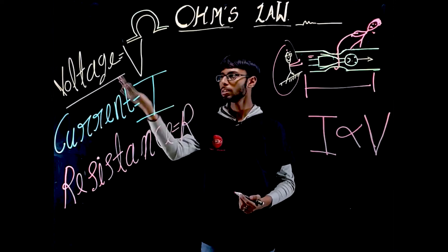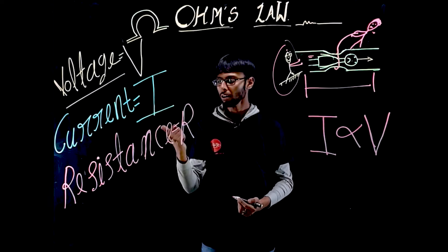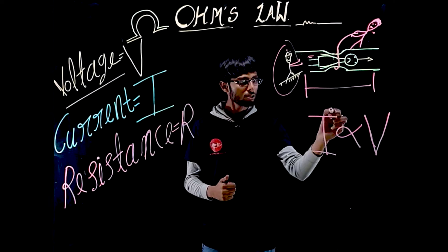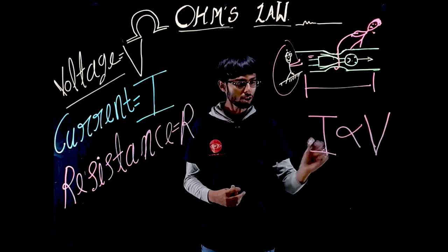As we have seen, voltage is denoted by V, current by I, resistance by R. So this current is proportional to voltage, that is, the potential difference.